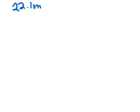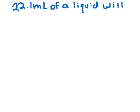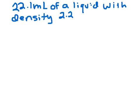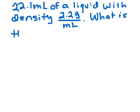22.1 milliliters of a liquid with density 2.2 grams per milliliter. What is, and you're probably guessing, the mass. So that's our problem.